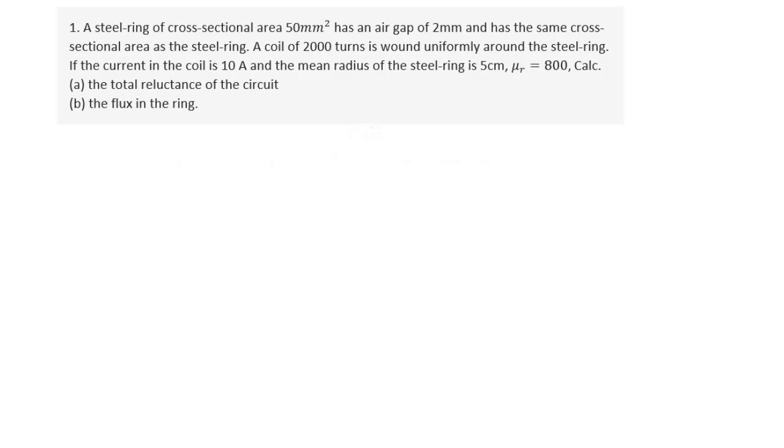A steel ring of cross-sectional area 50 mm squared has an air gap of 2 mm and has the same cross-sectional area as that of the ring. A coil of 2,000 turns is wound uniformly around the steel ring. If the current in the coil is 10 amperes and the mean radius of the steel ring is 5 cm, and the relative permeability of the steel ring is 800, calculate: A) the total reluctance of the circuit, and B) the flux in the circuit.